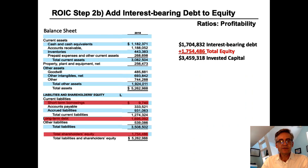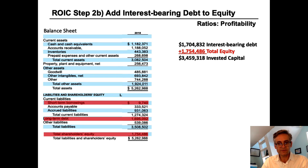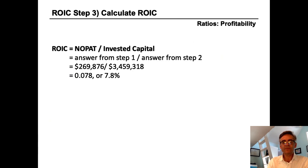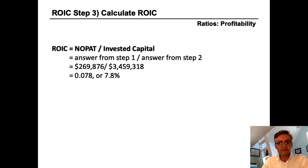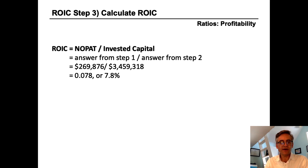We add interest-bearing debt to total equity to arrive at invested capital. Interest-bearing debt is $1.7 billion, and we can see directly on the balance sheet $1.7 billion also in total shareholders' equity. Added together, that gives us total invested capital of $3.459 billion. Now we have both pieces for ROIC: NOPAT from step one and invested capital from step two. Dividing NOPAT by invested capital gives Hasbro a return on invested capital of 7.8%.